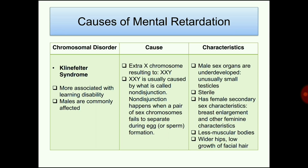Klinefelter syndrome is more associated with learning disability and commonly affects males. The cause is an extra X chromosome resulting in an XXY karyotype, usually caused by non-disjunction — when a pair of sex chromosomes fails to separate during egg or sperm formation during meiosis. Characteristics include underdeveloped male sex organs, unusually small testicles, sterility, female secondary sexual characteristics such as breast enlargement, less muscular bodies, wider hips, and low growth of facial hair.